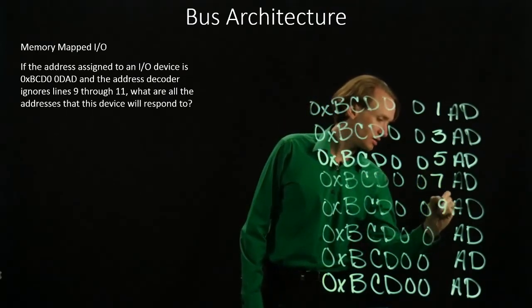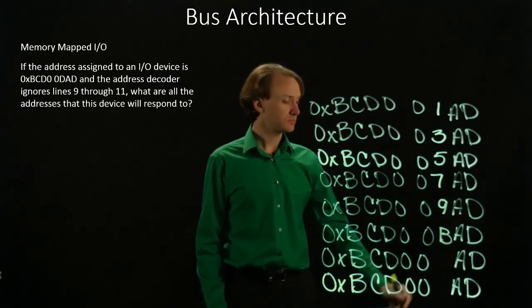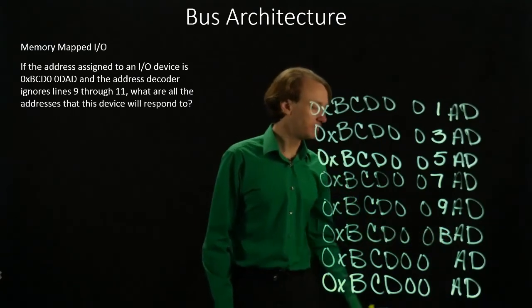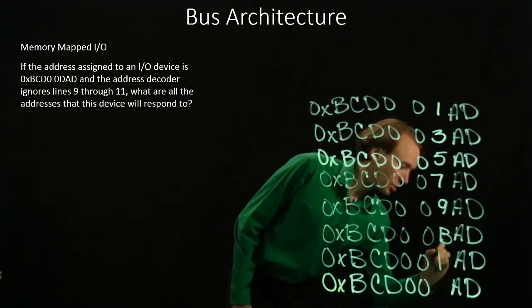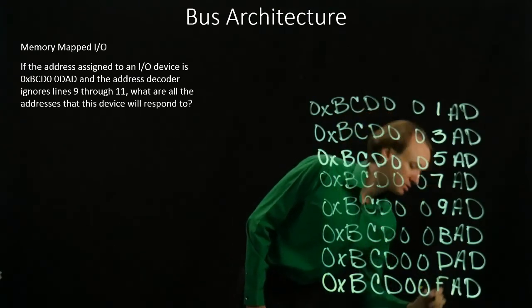7, 9, 9 plus 2 is b. So that's 1, 0, 1, 1. Then 1, 1, 0, 1 is d. And then 1, 1, 1, 1 is f.